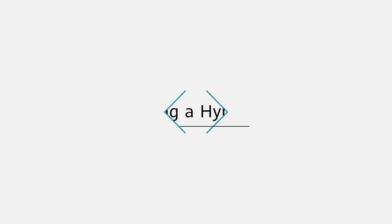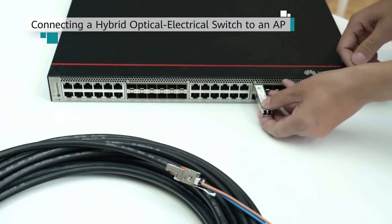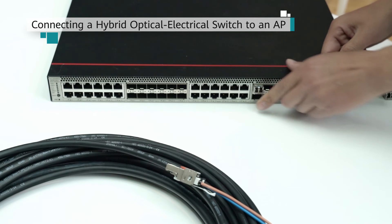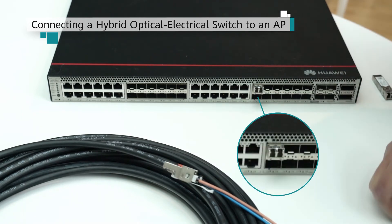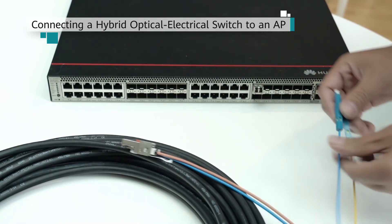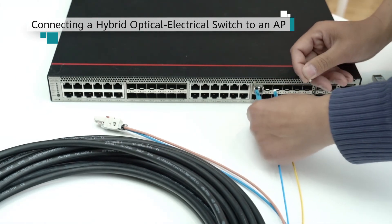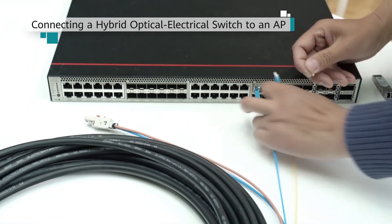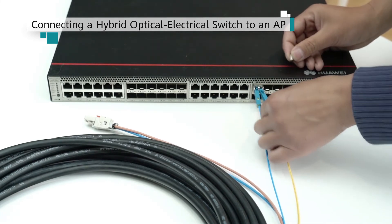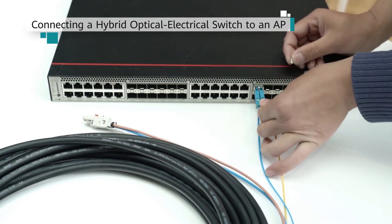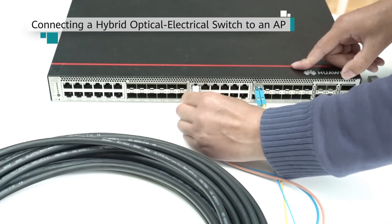Connecting a hybrid cable. Remove dust plugs from the optical ports on a switch and an AP and install optical modules. Connect the LC connectors at one end of a hybrid cable to the RX and TX ports of an optical module installed on the switch. Connect the RJ45 connector at the same end to a Multi-GE port on the switch.